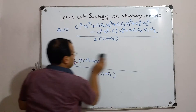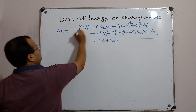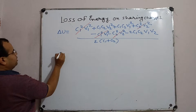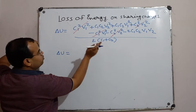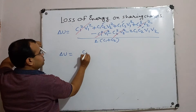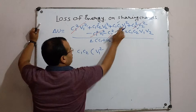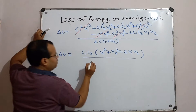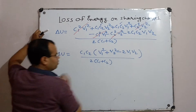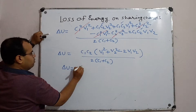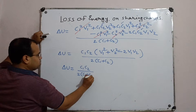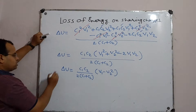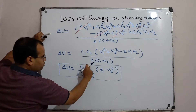Now you can see that some terms cancel: C1 squared V1 squared cancels, and C2 squared V2 squared, being negative, also cancels. What is left — writing del u — C1C2 is common in the remaining terms, so we factor that out. What remains is V1 squared plus V2 squared minus twice V1V2, divided by twice (C1 plus C2). This can be written as C1C2 upon twice (C1 plus C2), and a squared plus b squared minus 2ab equals (V1 minus V2) whole squared.